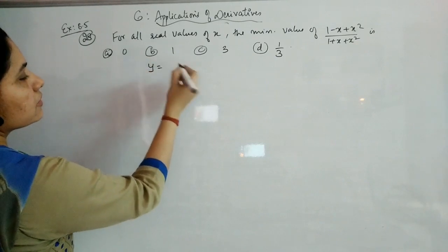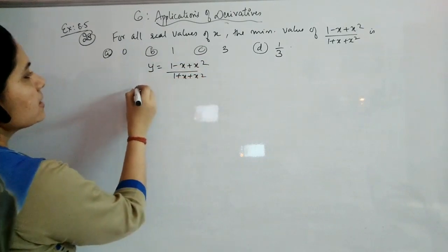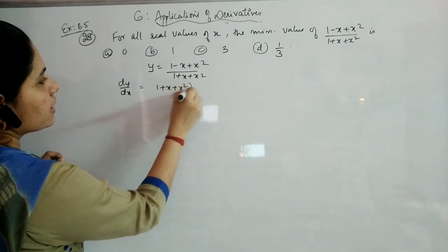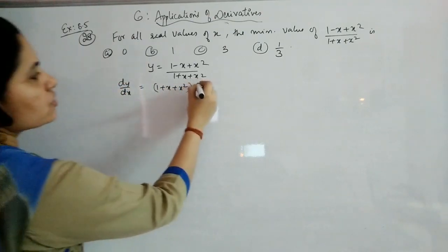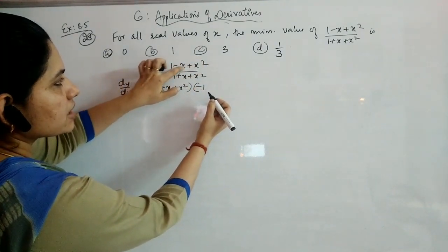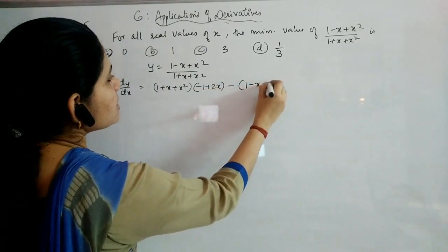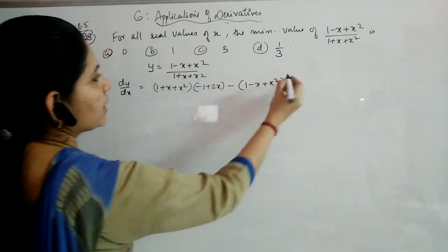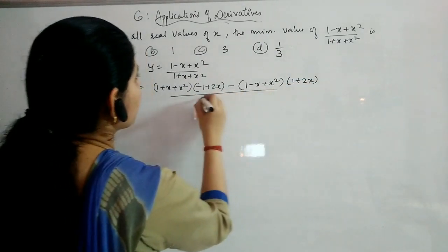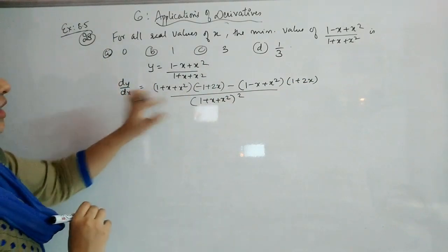Next problem: y = (1 - x + x²) / (1 + x + x²). Differentiating with respect to x using the quotient rule: dy/dx = [(1 + x + x²) · (-1 + 2x) - (1 - x + x²) · (1 + 2x)] / (1 + x + x²)².